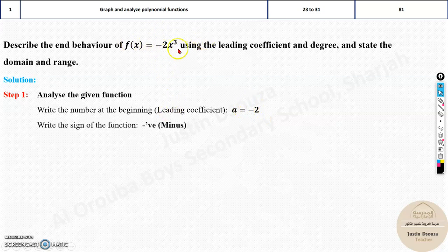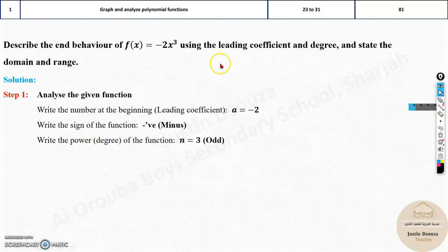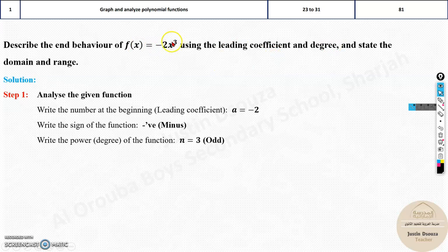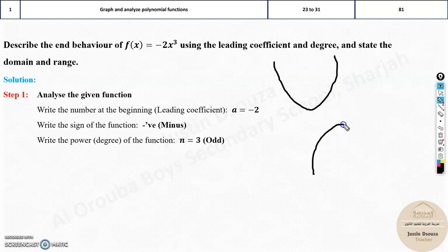Then the sign is negative. Why this is required? Because this graph changes its position. And then we have the degree. So what is the degree? That is the power, the highest power basically. There is only 1, so we write it as 3. And this is odd. This is also very important. If it is odd, the graph will be either like this or like this. Whereas it is even, it is a parabola.